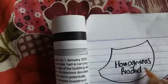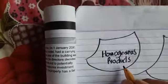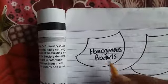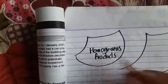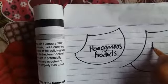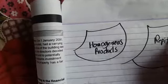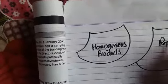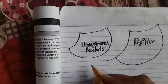Standard cost can be calculated for homogenous products — products which are not different from each other — and for repetitive work. These are the two key conditions for standard costing to be applicable.